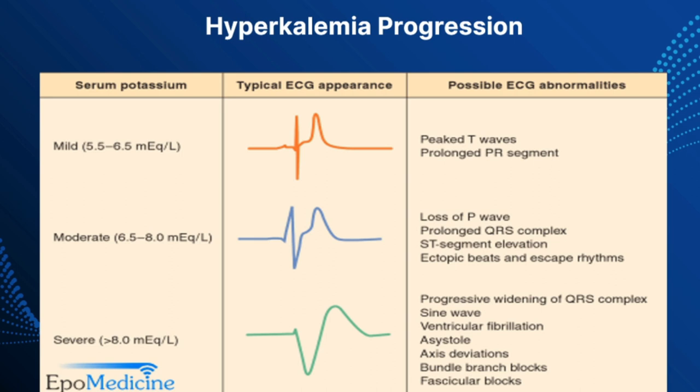The thing with this graph is it's not a hundred percent. Sometimes you can have a severe level of potassium and only have a peaked T-wave — it all depends on the individual and how resistant they are. Dialysis patients are highly resistant to higher potassium levels compared to your average person because they deal with it all the time. Their EKGs won't show as dramatic signs, so you can't always predict the level based off the 12-lead.